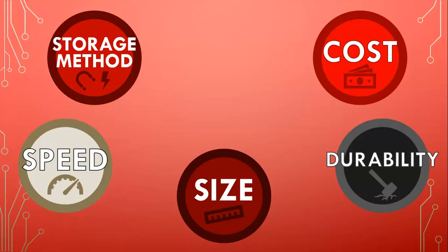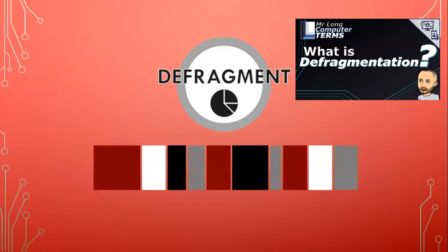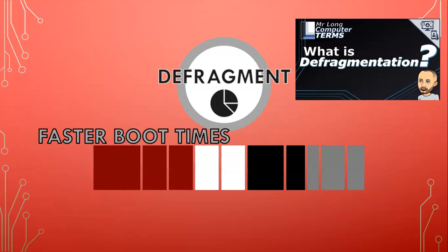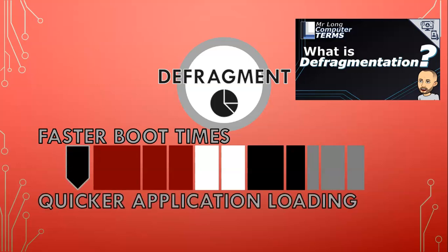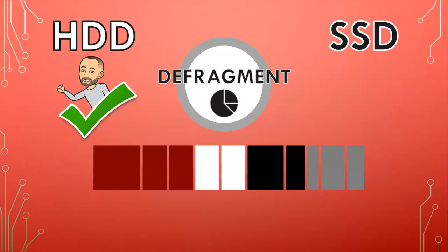There is another factor to consider when talking about the differences between hard drives and solid state drives, and that is defragmentation. Basically, if files become scattered on a hard drive, defragmentation will reorganize data so that related files are together, meaning it's quicker to access the files. This can lead to faster boot times, quicker application loading, and overall smoother system performance, especially on older hard drives. In the past, regular defragmentation was recommended for hard drives to maintain optimal performance. However, with advancements in file systems and storage technologies, modern operating systems automatically perform scheduled defragmentation in the background, reducing the need for doing it manually.